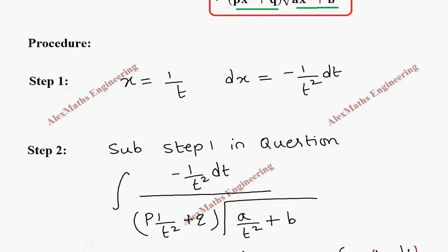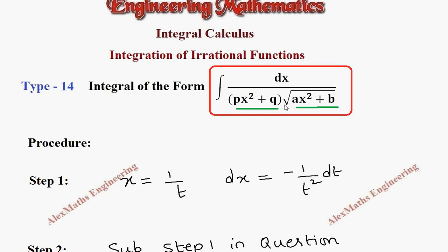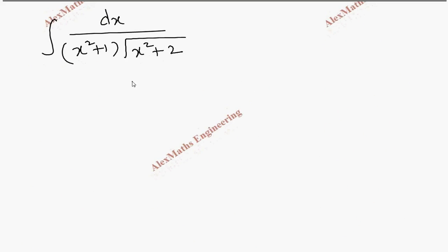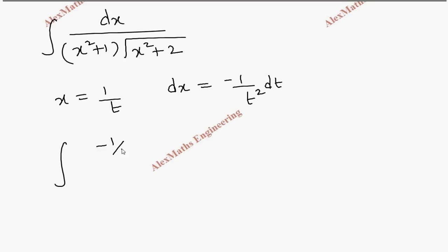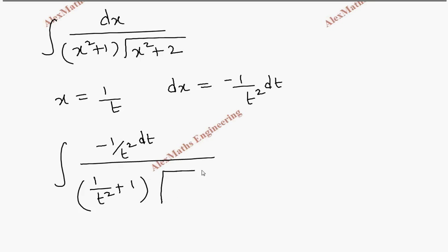Now we find both quadratics in the complete square form. As per the procedure for dx divided by Px² plus Q into root of Ax² plus B, we take x equal to 1 by t, and its differentiation dx is minus 1 by t² dt. So the integral becomes minus 1 by t² dt divided by 1 by t² plus 1 times root of 1 by t² plus 2.